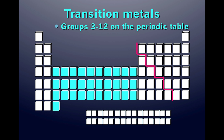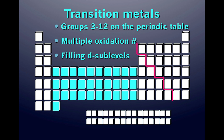The transition elements are found in groups 3 through 12 on the periodic table. They are important because they have multiple oxidation numbers — if you look on your periodic table, you see that most of them have more than one. The transition metals have electrons filling D sublevels.